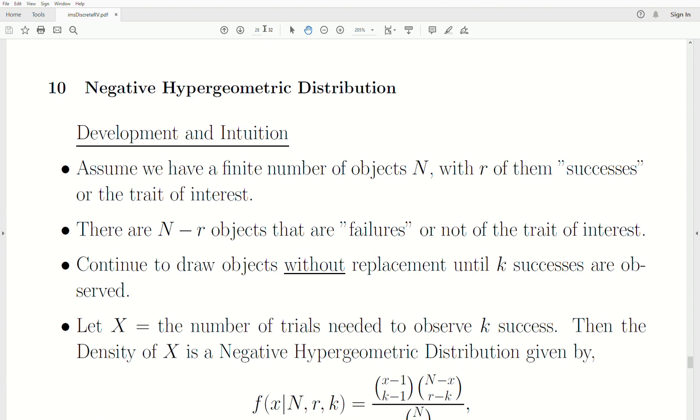The Negative Binomial Distribution deals with an infinite sample. The Negative Hypergeometric Distribution deals with a finite sample. So let's jump right in.